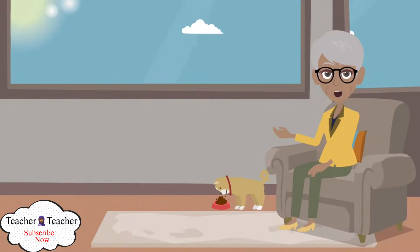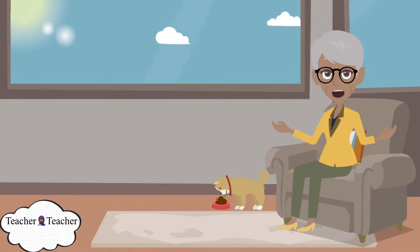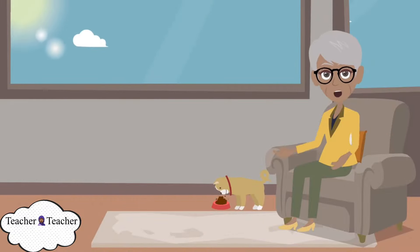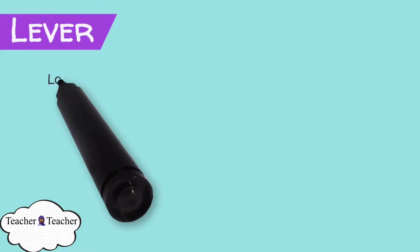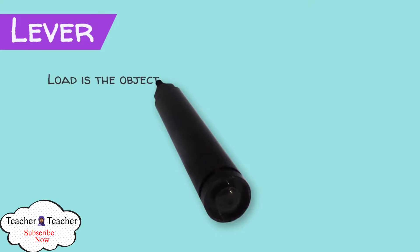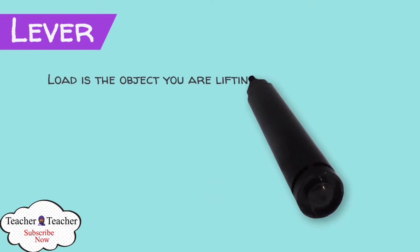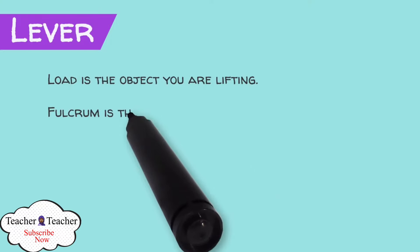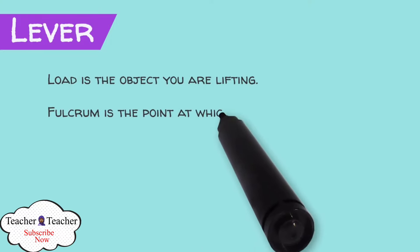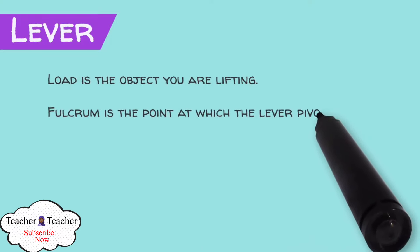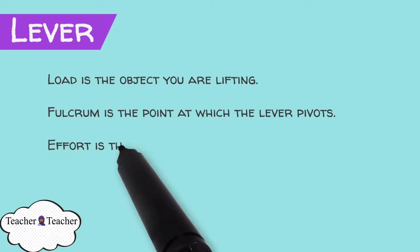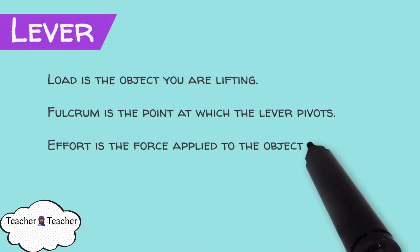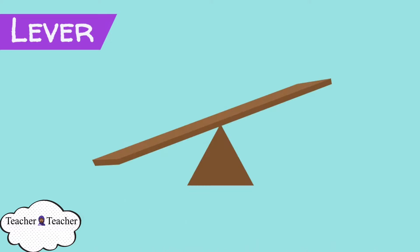Let me quickly run through these three important terms for your better understanding. Load is the object you are lifting. Fulcrum is the point at which the lever pivots. The effort is the force applied to the object to be moved.